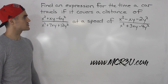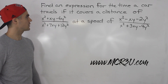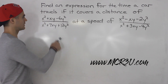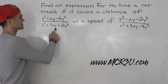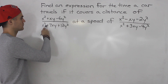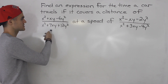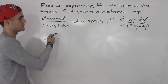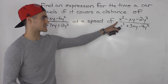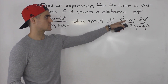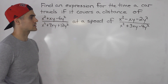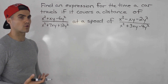In this question we have to find an expression for the time a car travels if it covers a distance of x squared plus xy minus 6y squared over x squared plus 7xy plus 12y squared, at a speed of x squared minus xy minus 2y squared all over x squared plus 3xy minus 4y squared.